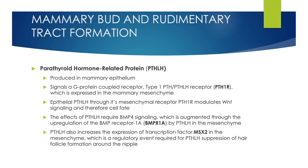A very important factor in mammary bud and rudimentary tract formation is parathyroid hormone-related protein, also known as PTHLH. PTHLH is produced in mammary epithelium and signals a G-protein-coupled receptor, type 1 PTH/PTHLH receptor, also known as PTH1R, which is expressed in the mammary mesenchyme. Epithelial PTHLH, through its mesenchymal receptor PTH1R, modulates WNT signaling and therefore cell fate. The effects of PTHLH require BMP4 signaling, which is augmented through the upregulation of the BMP receptor 1A, also known as BMPR1A, by PTHLH in the mesenchyme.